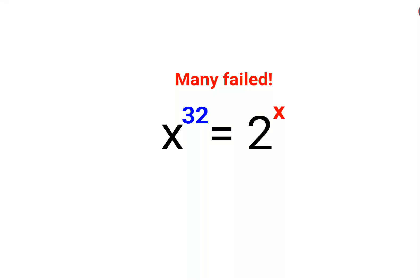Welcome everyone. When you have something like x raised to 32 equals 2 raised to x, the first very important thing you should do is take the xth root on both sides.